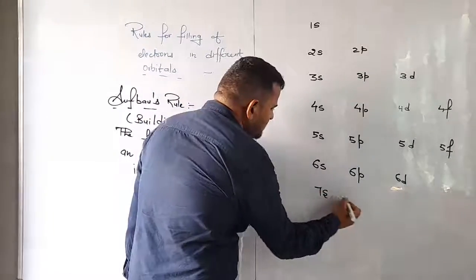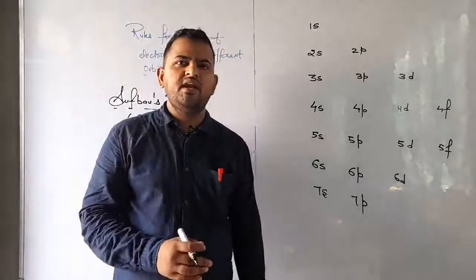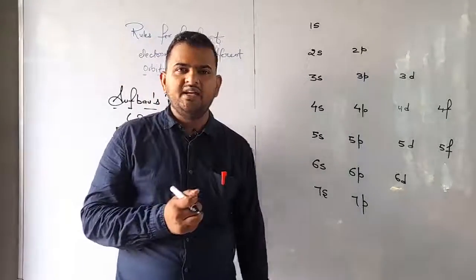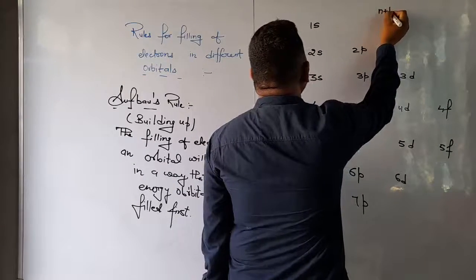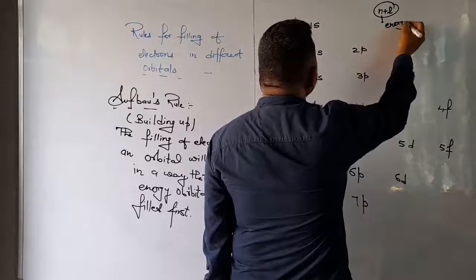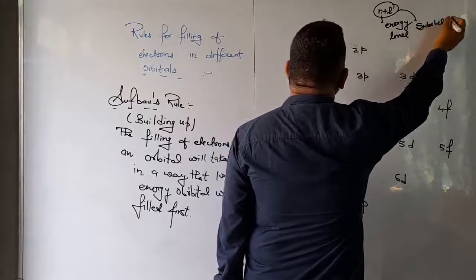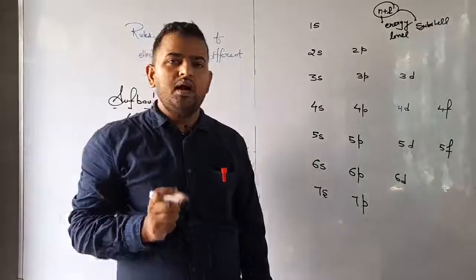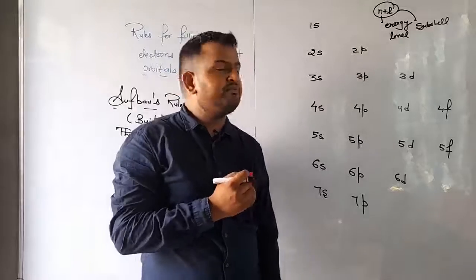Then we have 7s and 7p. According to this rule, the orbital with the lowest energy is filled first. We have discussed the energies of these orbitals using two rules: one is n+l value where n is the energy level and l is the sub-shell value. If n+l is less, then energy is less. If n+l values are the same, then we look at n — if n is less, then energy is less.